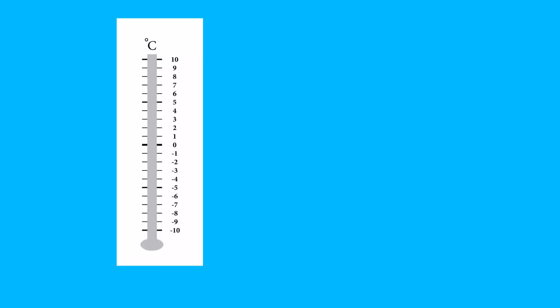A really easy way to think about negative numbers is to think about temperature on a thermometer. This is just a number line, but in a vertical position, as you can see here.